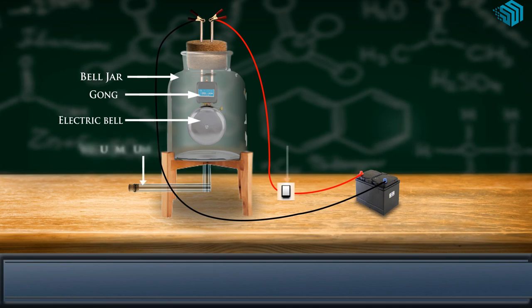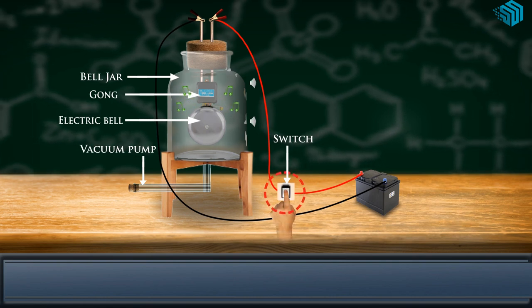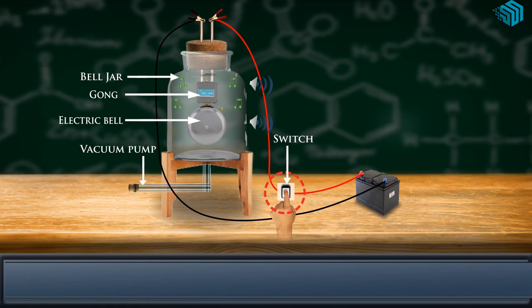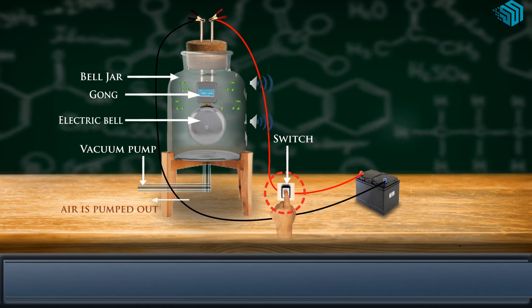Now start the vacuum pump. When the air in the jar is pumped out gradually, the sound becomes fainter, although the same current is passing through the bell. After some time, when less air is left inside the bell jar, you will hear a very feeble sound.